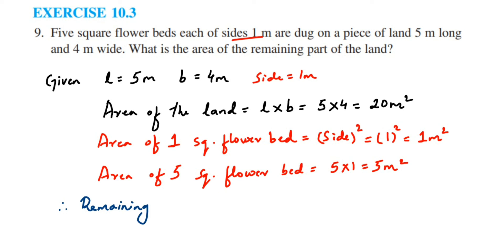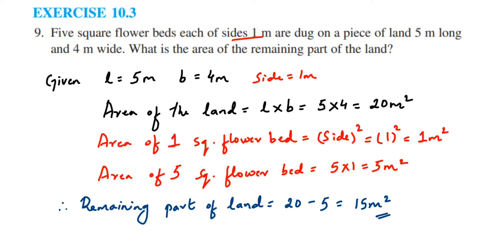Therefore, the remaining part of the land equals total area of the land minus the area of the 5 flower beds: 20 minus 5 equals 15. So the answer is 15 meter square. This is the area of the remaining part. This was a simple question — I hope it is clear.